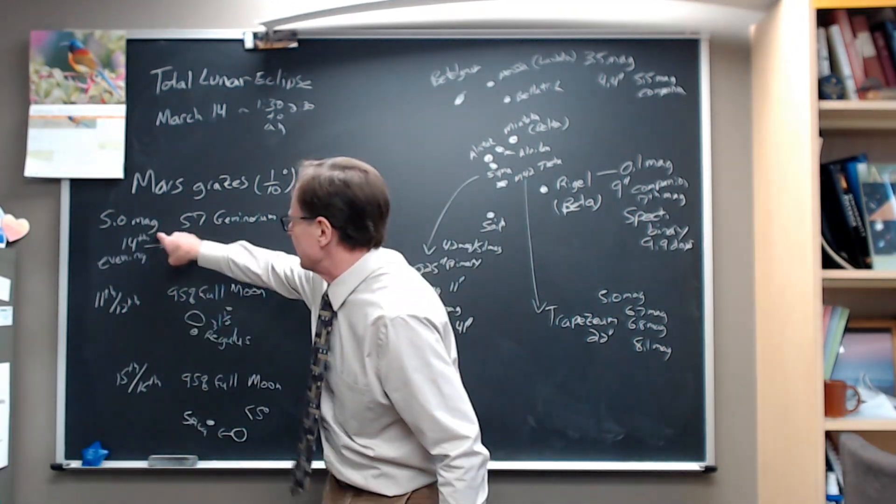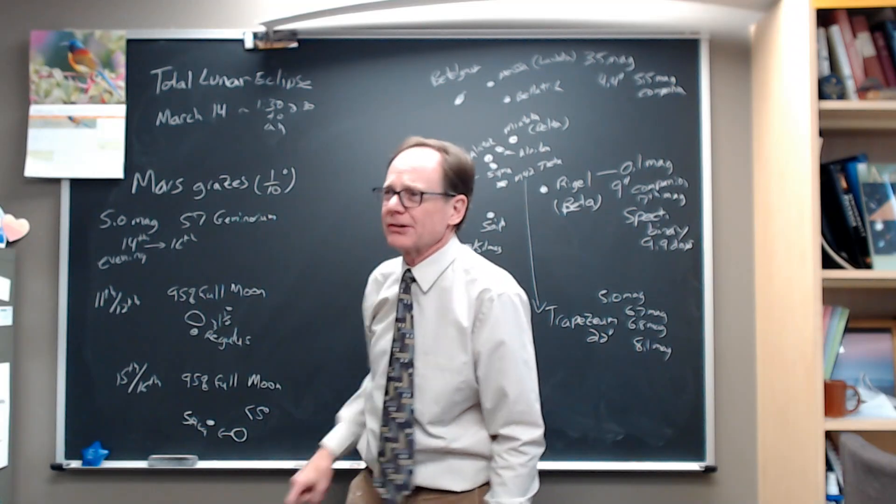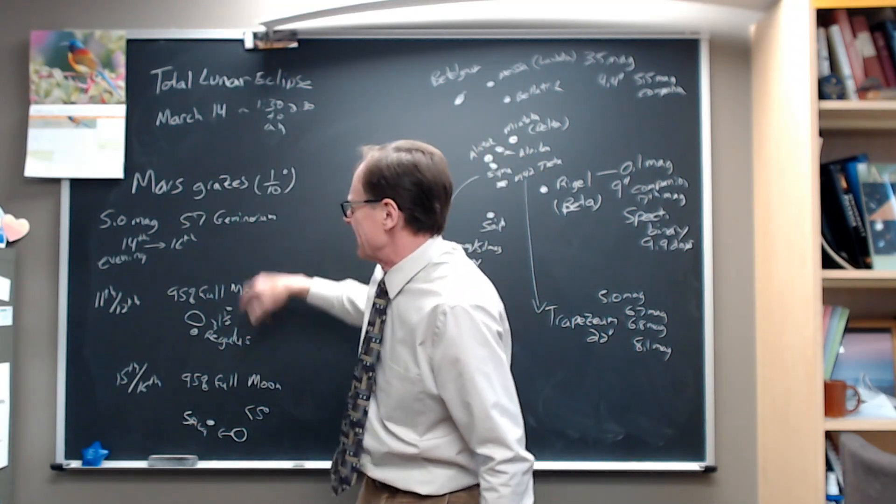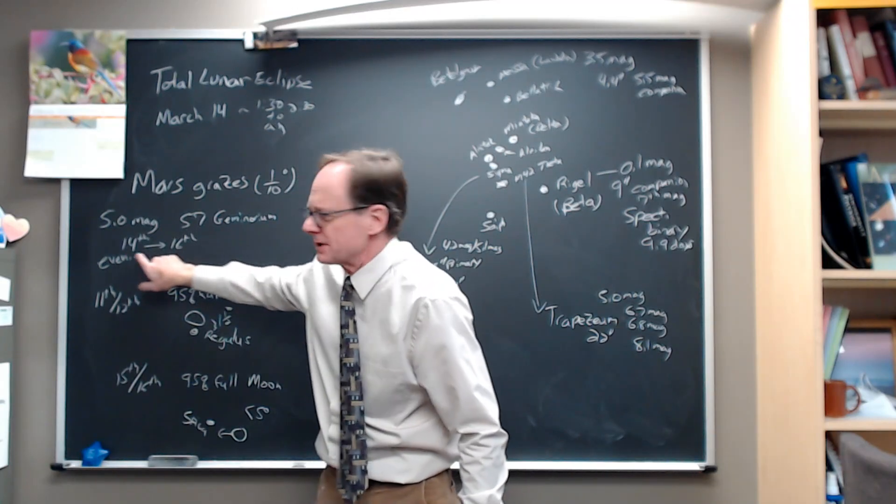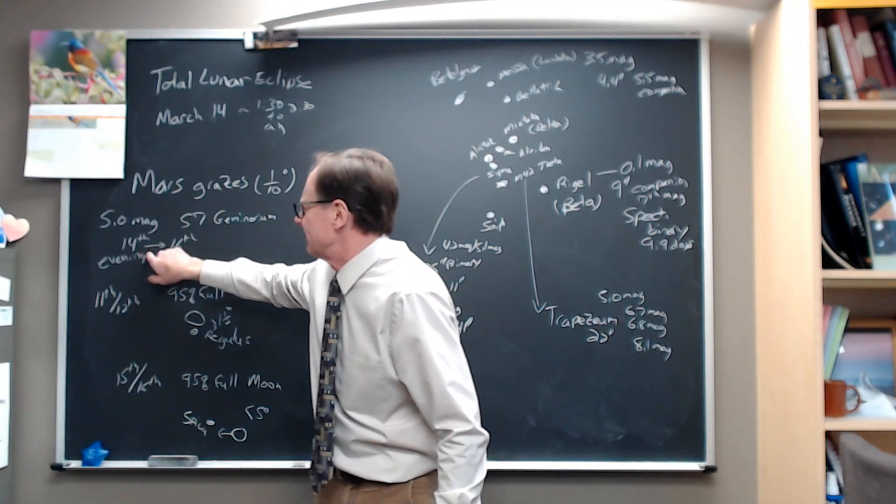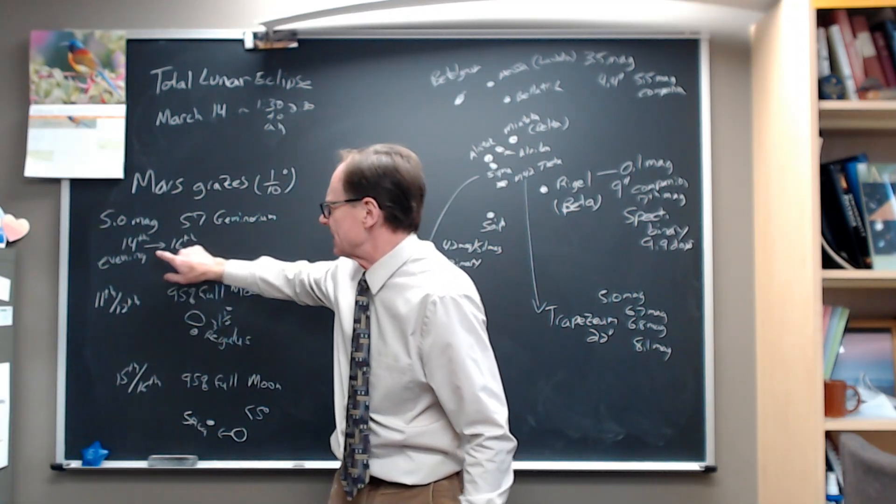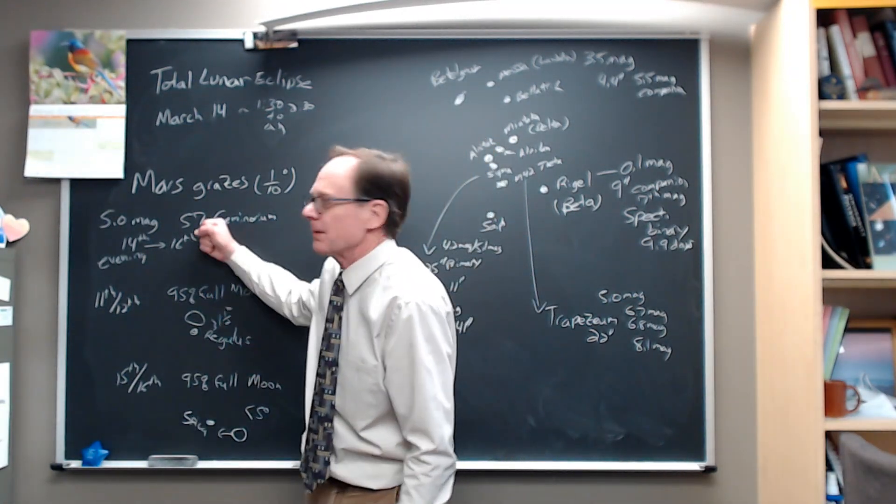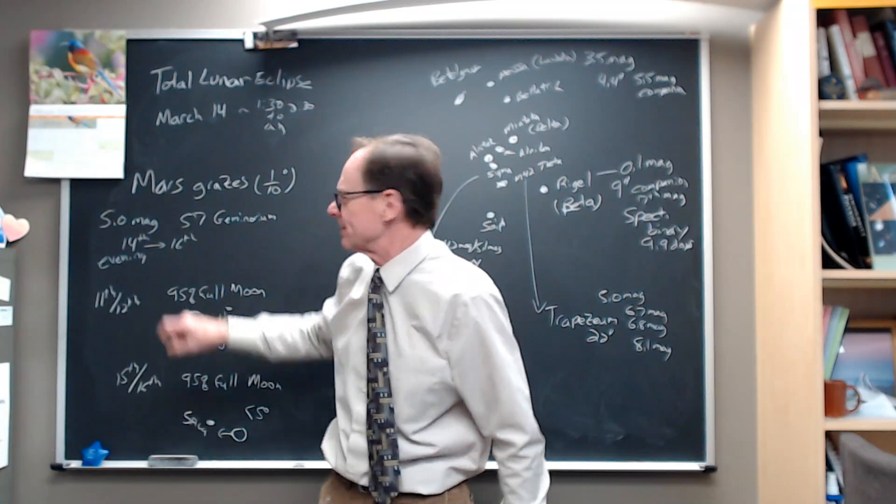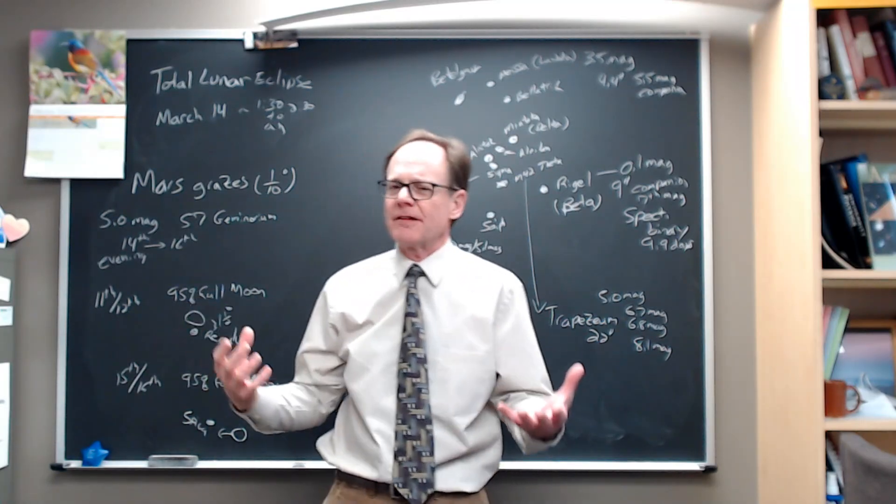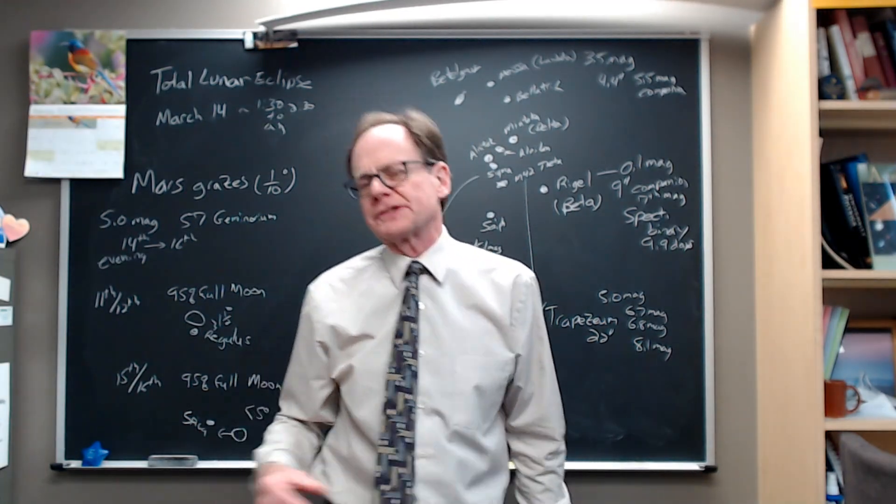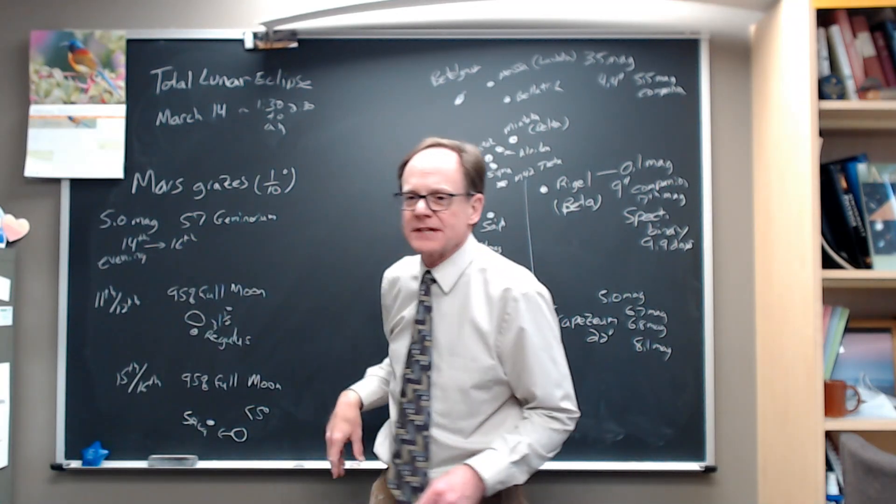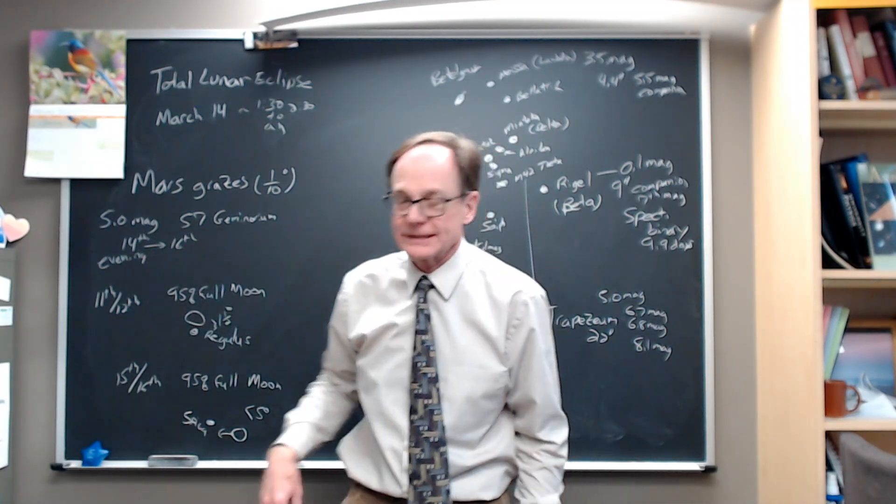A tenth of a degree, remember your finger at arm's length is one degree. So that's pretty close that it slides by. It goes from the evening of the 14th to the evening of the 16th. The evening of the 15th into the morning of the 16th is when it's going to be closest to watch Mars slide past there. Binoculars will help you out because the star is faint enough. Even if you have good dark skies, it's going to be hard to see the fainter 57 Geminorum next to bright Mars. So that's what we got.